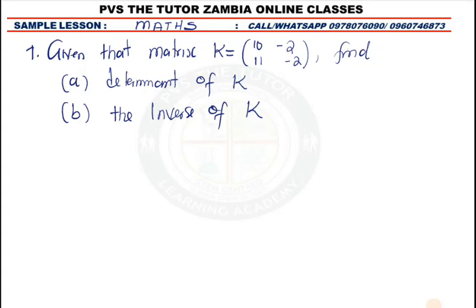Alright, so we have a question here that says given that matrix K is (10, -2; 11, -2), find the determinant of K and find the inverse of K.